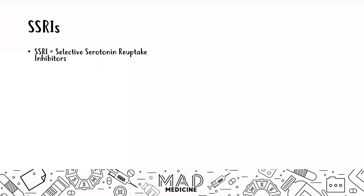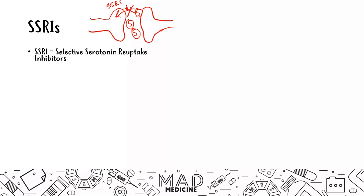SSRIs are selective serotonin reuptake inhibitors. The main function of these drugs is to block the reuptake of serotonin in the synaptic cleft. When you have serotonin floating around in the synapse, it's normally going to get taken up. SSRIs block this reuptake, allowing more serotonin to be available in the synaptic cleft so it can have a greater effect. We're not increasing the amount of serotonin your body releases — we're just reducing how quickly it gets reuptaken, which causes an increased effect based on the limited serotonin you actually have.